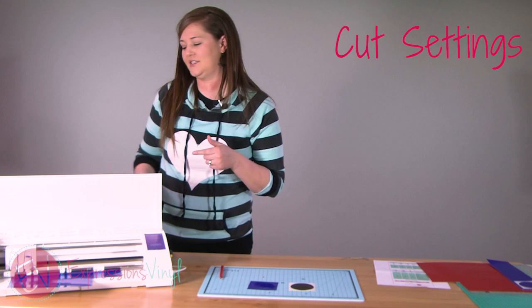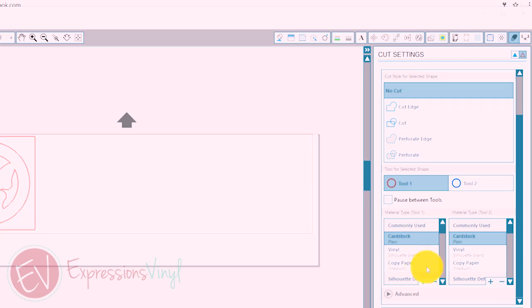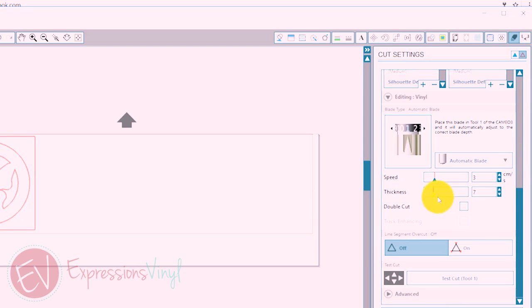So let's go ahead and take a look at the default settings. If you go into the program and you select the very top, it'll say commonly used products, it'll select Vinyl. It will default to this setting: a blade of 1, a speed of 3, and a thickness of 7.